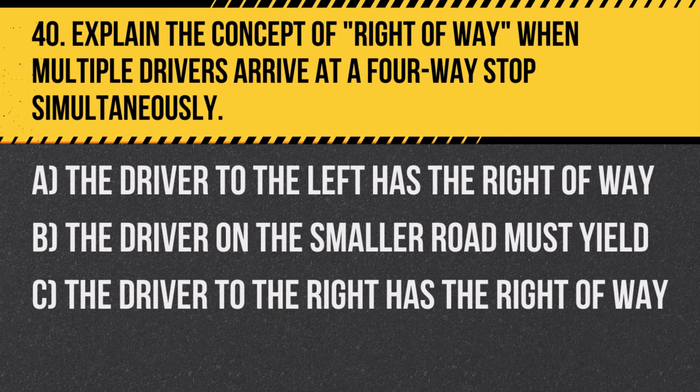Question 40: Explain the concept of right-of-way when multiple drivers arrive at a four-way stop simultaneously. A. The driver to the left has the right-of-way. B. The driver on the smaller road must yield. C. The driver to the right has the right-of-way. Answer: C. The driver to the right has the right-of-way. This rule helps prevent confusion and accidents at intersections without traffic signals.